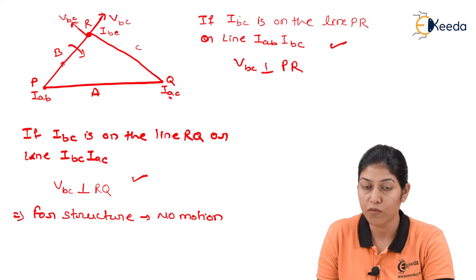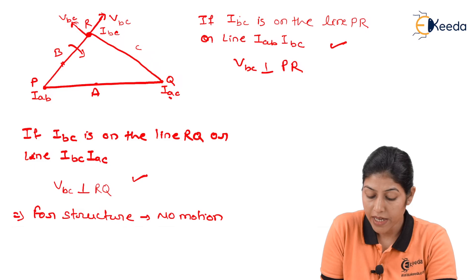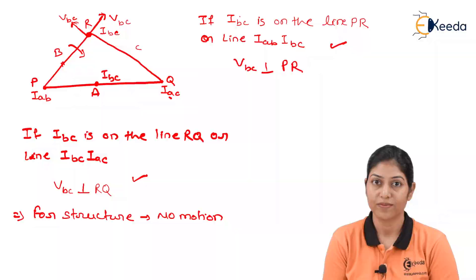Here, IAB and IAC are on the same line PQ, so IBC also must lie on the same line. Thank you so much.